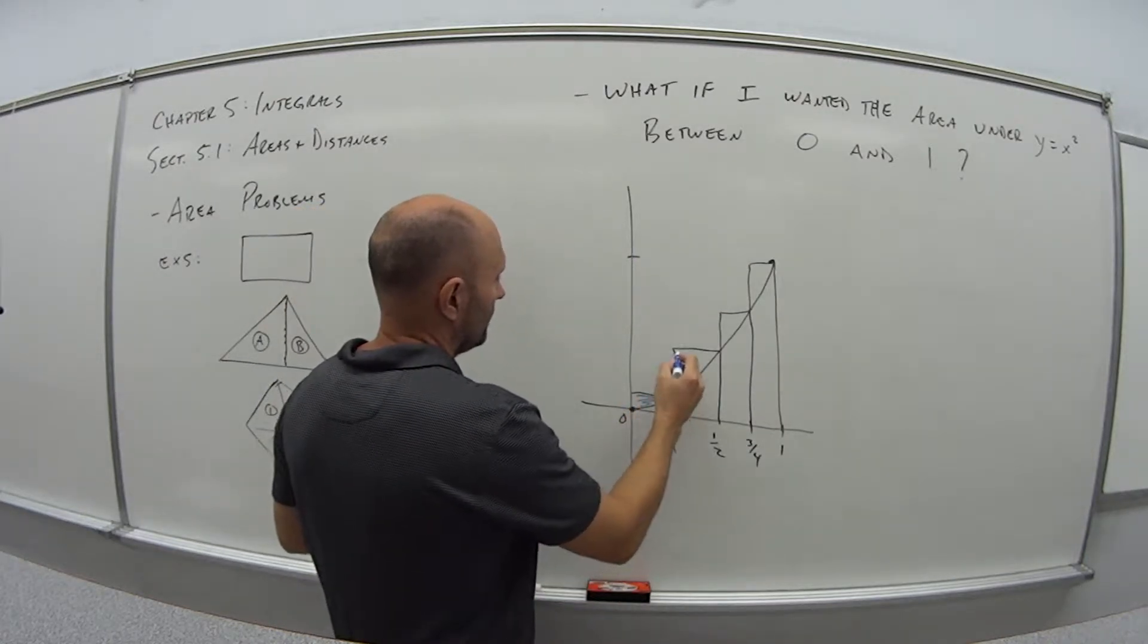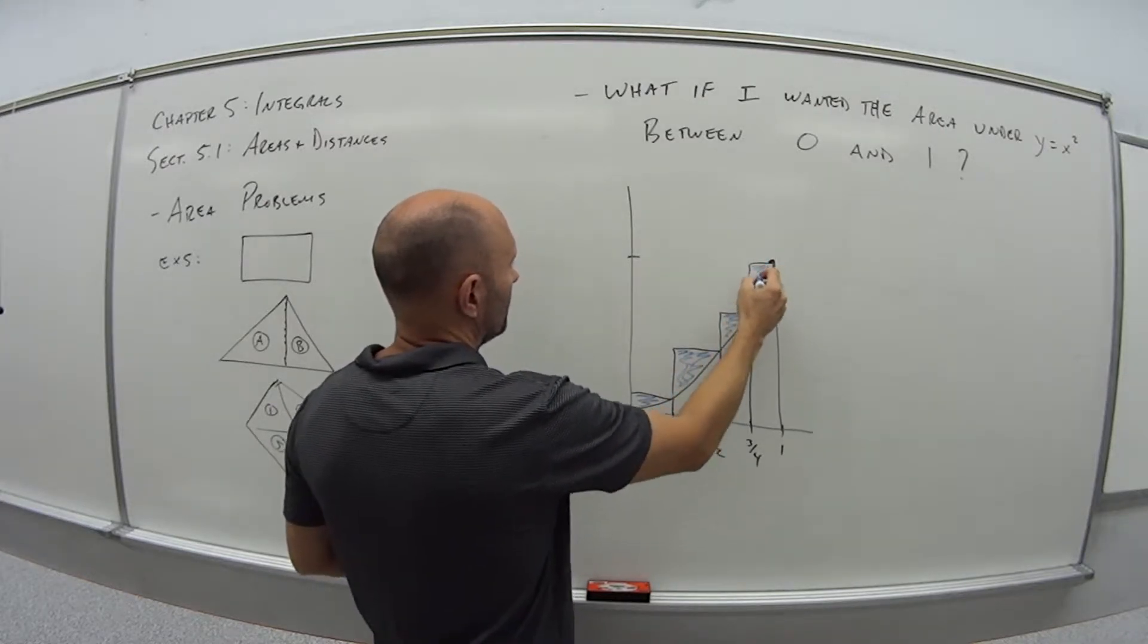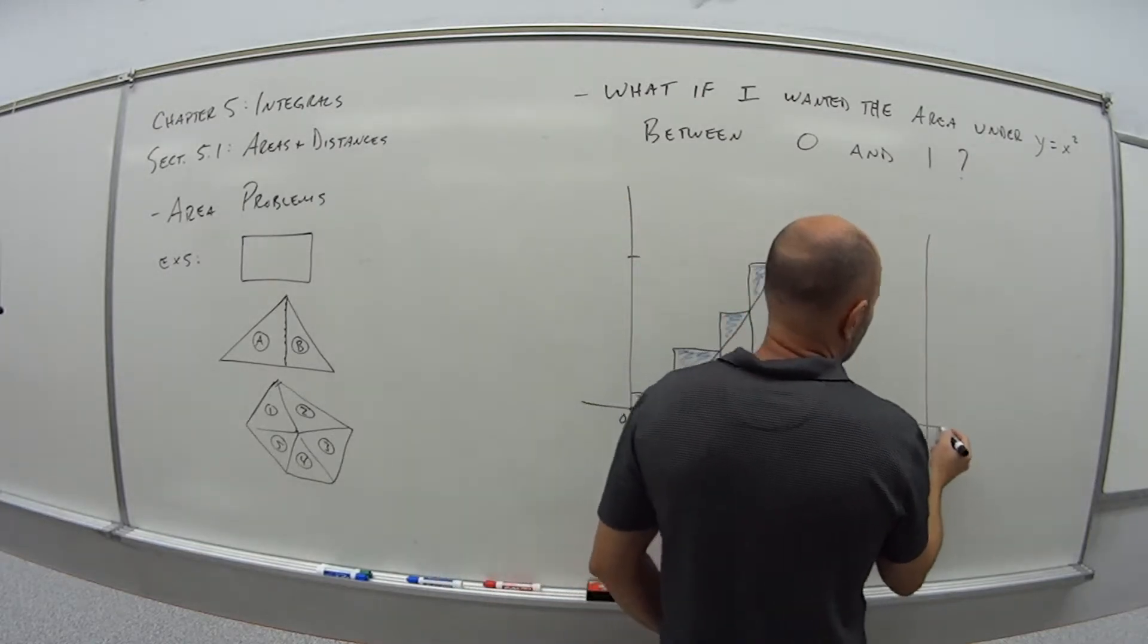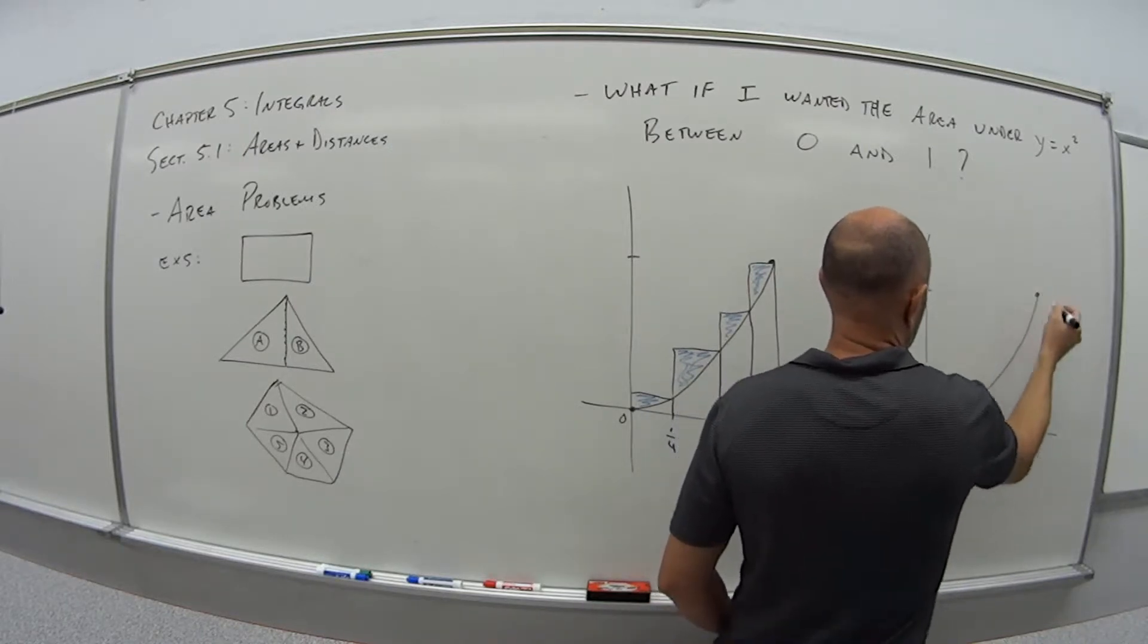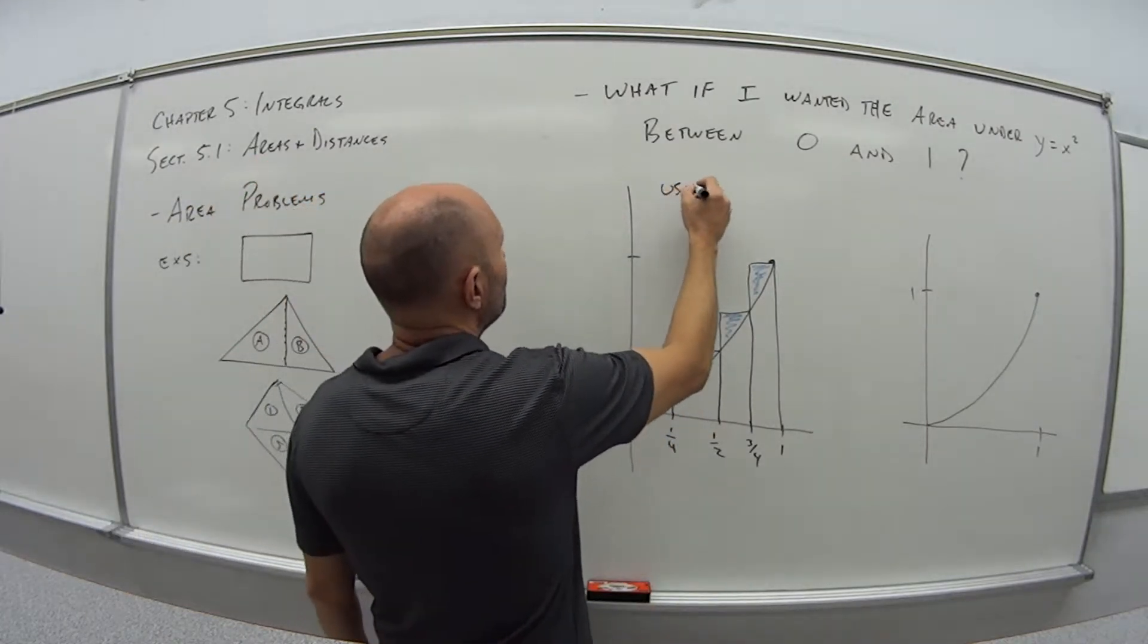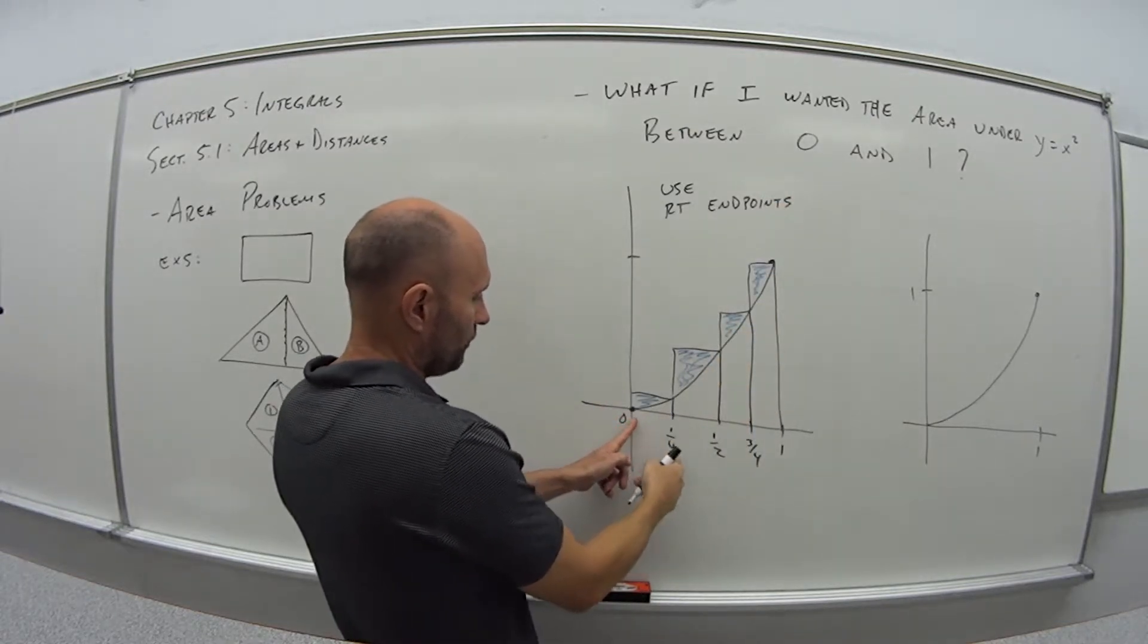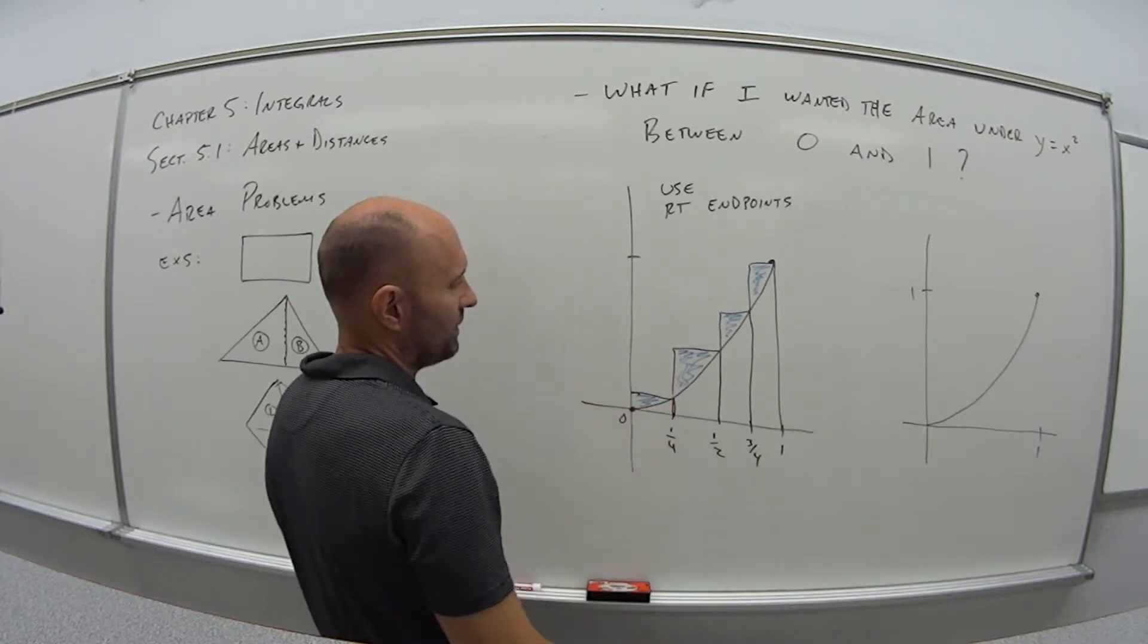But what do I have here? I have this part is extra, this is extra, this is extra, this is all extra. So, even though it's a decent approximation, it's going to be more than what I need, right? So, what if instead, so this one here, I used the right endpoints. Meaning, I went to this section of the interval, went to the right endpoint, went up to where it met the function, and then came over. And that gave me my first rectangle.